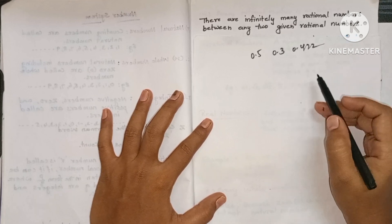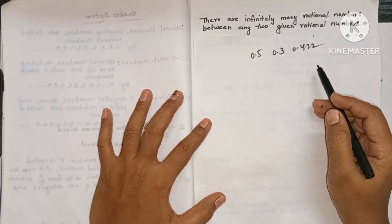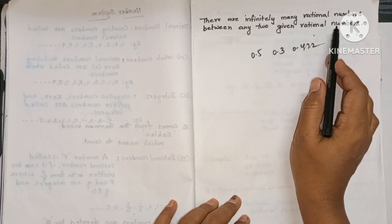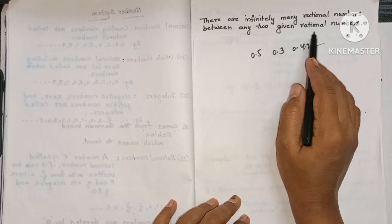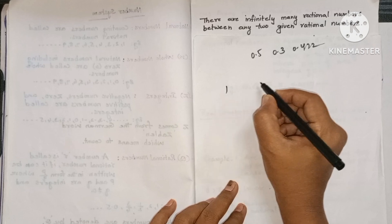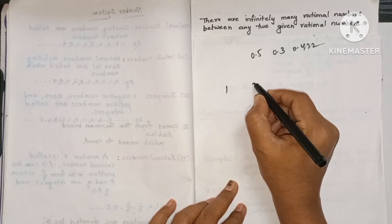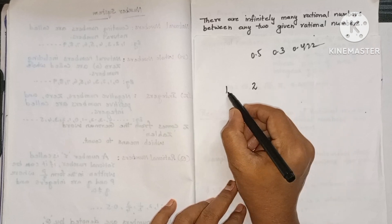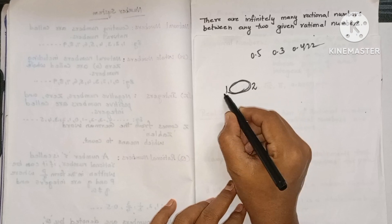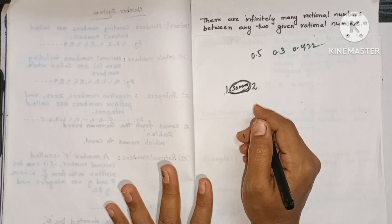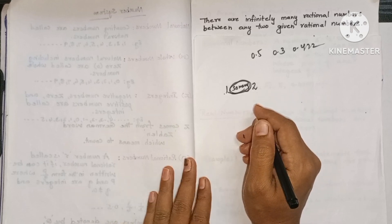The most important point to keep in mind: there are infinitely many rational numbers between any two given rational numbers. For example, between 1 and 2 there are infinitely many rational numbers.